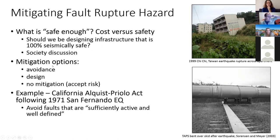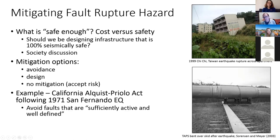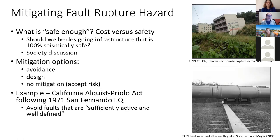For fault rupture hazard, there are three fundamental mitigation options. We can choose to mitigate by avoidance — choose not to design buildings over active faults. This is a photograph from the 1999 Chi-Chi Taiwan earthquake, where two apartment buildings were present: one happened to be constructed across the scarp of the Chelungpu fault and suffered extreme tilt, with no loss of life fortunately. The adjacent building was constructed just enough onto the footwall that it completely avoided major structural damage. An easy mitigation option for discrete facilities is to construct them away from active faults.